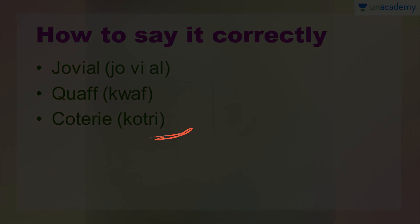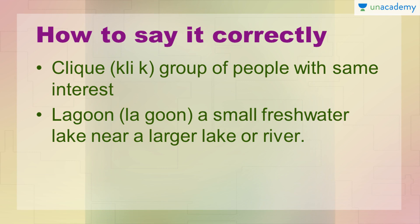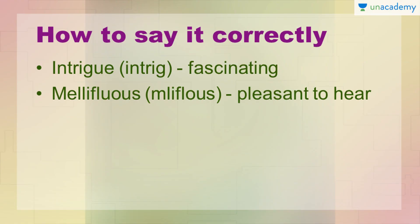The next one we have is 'clique.' This is clique — it means a group of people with the same interest. Aap keh sakte ho ki jo last word tha — coterie — uska synonym hai clique. Iska meaning bhi same hi hota hai. The next is 'lagoon.' Lagoon ka meaning hota hai a small freshwater lake near a larger lake or river — jaise ek kaafi badi nadi hai, uske paas hi koi ek choti si freshwater lake hai, toh usse kehte hain lagoon.